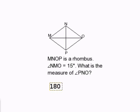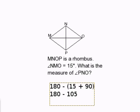So 180 degrees minus 15 plus 90. 180 degrees minus 105. So that leaves us with our missing angle being 75 degrees. And that completes our problem.